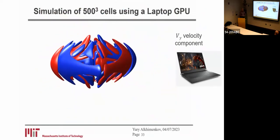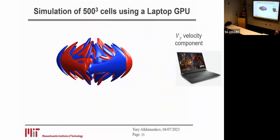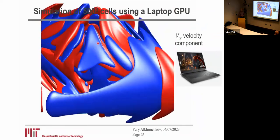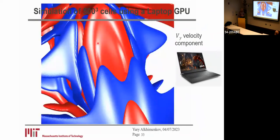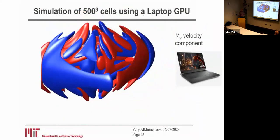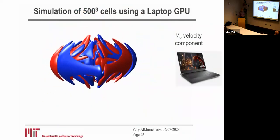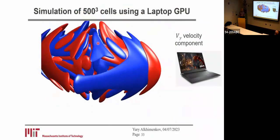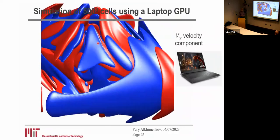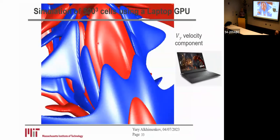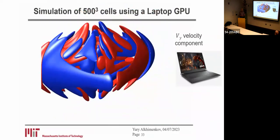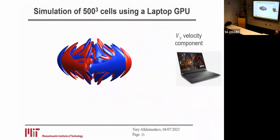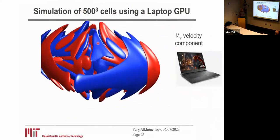In the middle, you can see a propagating slow wave. To summarize this part: using professional GPUs and also a laptop GPU, we can do a lot of things, and we can model waves in complex and heterogeneous media.